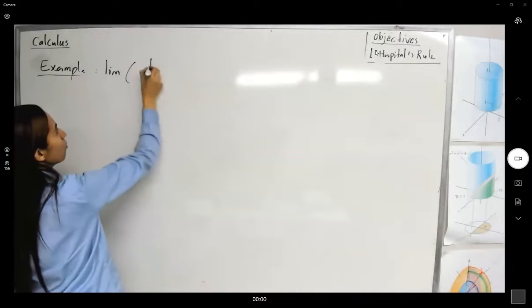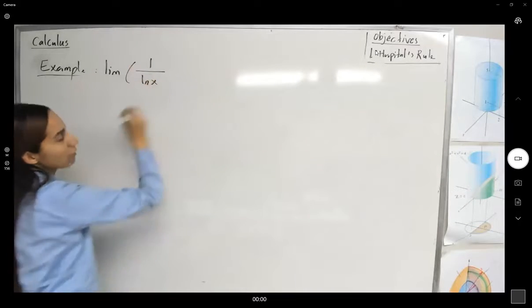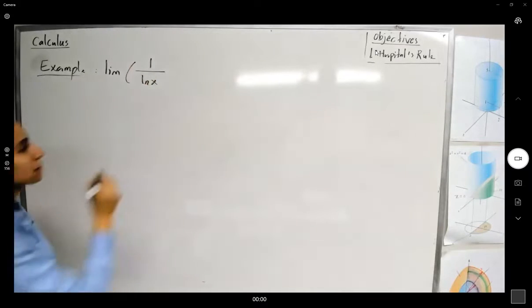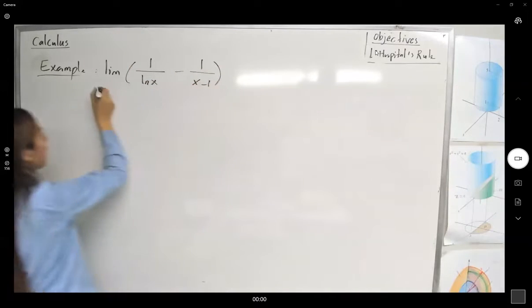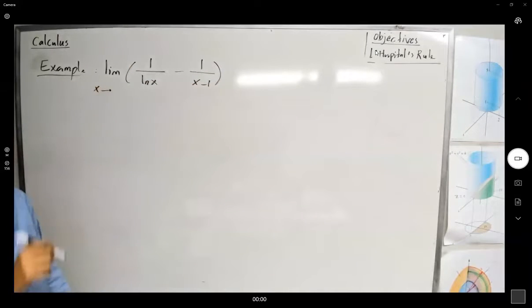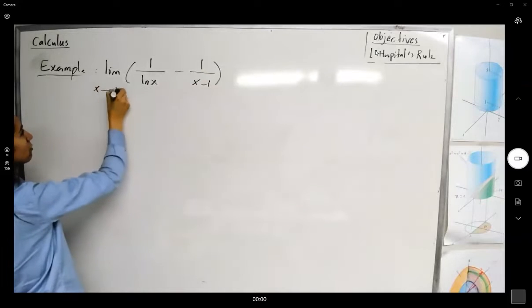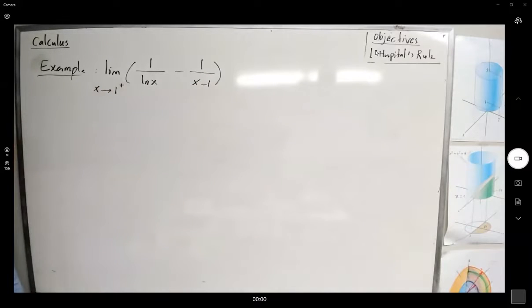The limit of 1 over ln of x minus 1 over x minus 1 as x approaches 1 from the right-hand side. Okay, very good. Remember that here you have a limit. The very first step is substitution.